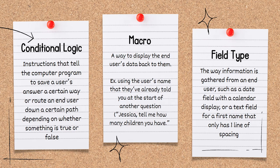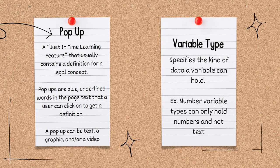A field type is the way information is gathered from an end user, such as a date field with a calendar display, or a text field for a first name that only has one line of spacing.